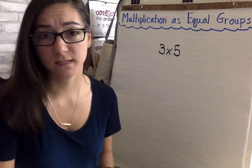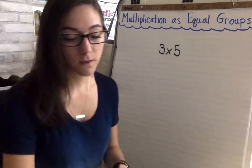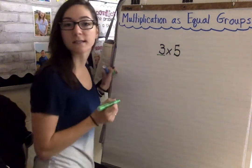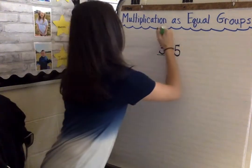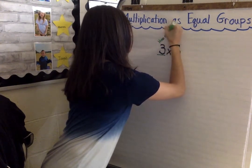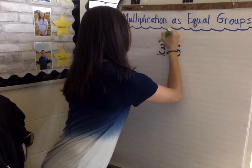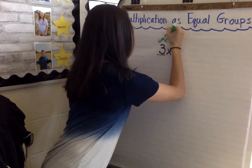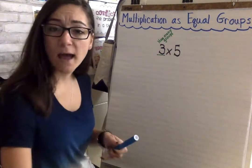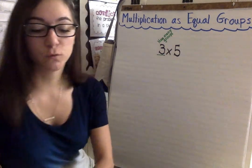Okay now the factors tell us different things. The first factor tells us how many groups to make and then the second factor tells us how many to put in each group.